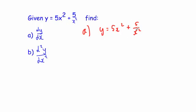Before we differentiate this we want to get this into a format that's easily differentiable. Let's look at this x² on the denominator and bring it up, so we're going to get y = 5x² + 5x⁻².